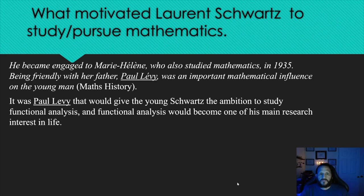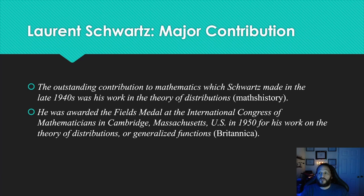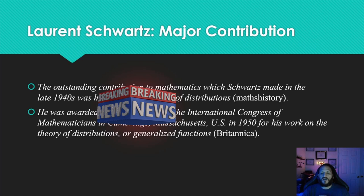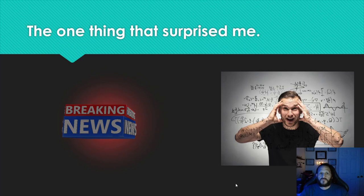Laurent Schwartz's major contribution. This is a biggie. The outstanding contribution to mathematics which Schwartz made in the late 1940s was his work in the theory of distributions. He was awarded the Fields Medal at the International Congress of Mathematicians in Cambridge, Massachusetts in 1950 for his work on the theory of distributions or generalized functions.